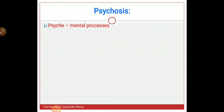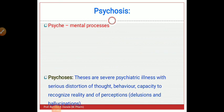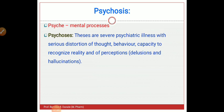So what is psychosis? 'Psych' means a mental process. Psychosis is related to the mind and the brain. These are severe psychiatric illnesses — that is, mental illness with serious distortion of thought, behavior, capacity to recognize reality, and of perceptions, including delusions and hallucinations.